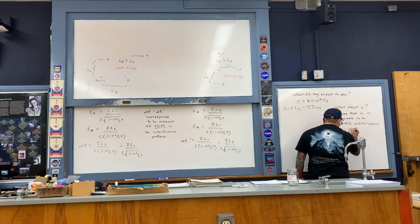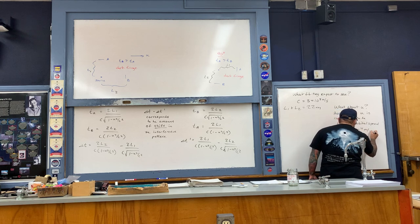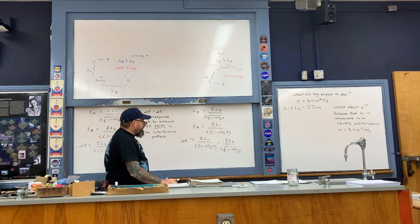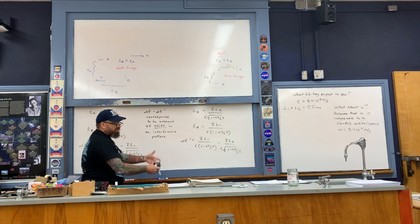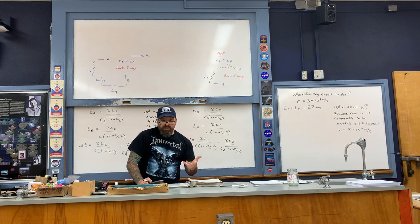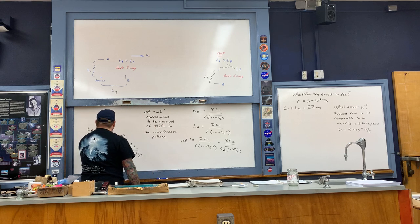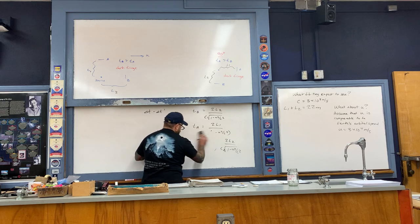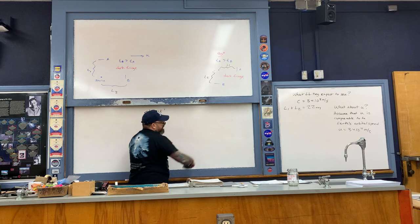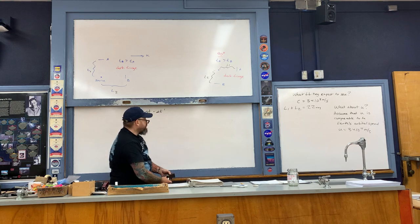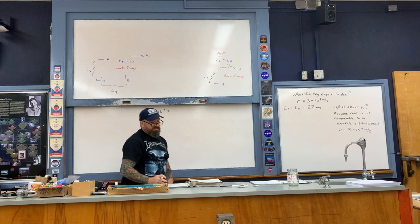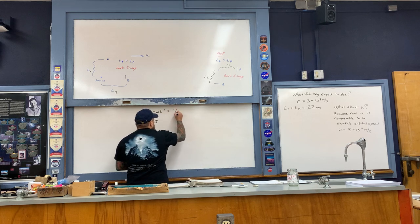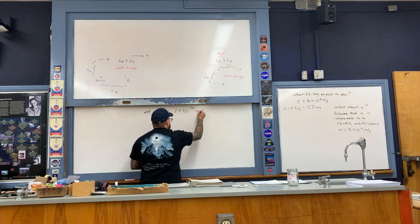The orbital speed U is 30 kilometers per second — 3 times 10 to the 4th meters per second. Based upon that expectation, when you take those numbers and plug them into the delta t equations, the difference in the delta t values is an extremely small number: about 7 times 10 to the minus 16 seconds.